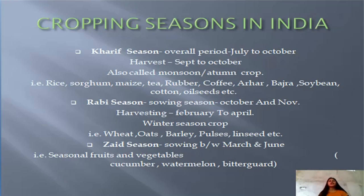The third is the Zaid season, which falls in March to June mid. Crops grown include food and vegetables like cucumber, watermelon, and bitter gourd.